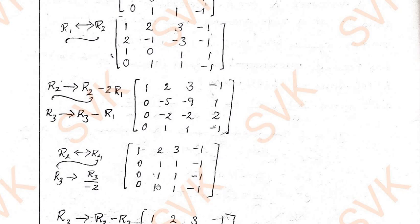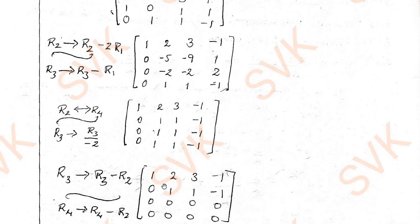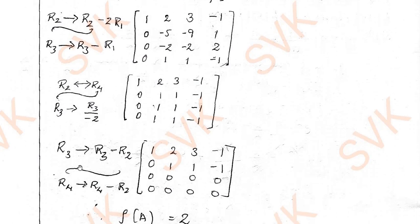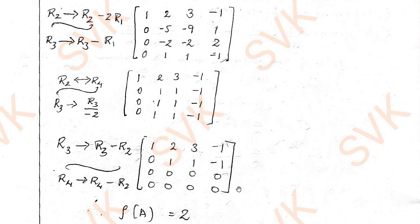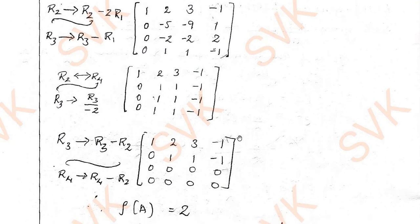Then I should make these elements as 0, these two elements as 0. By applying row operation, I have got this matrix. This is what the row reduced echelon form. The rank of the matrix is 2 here since the number of non-zero rows are only 2 rows.